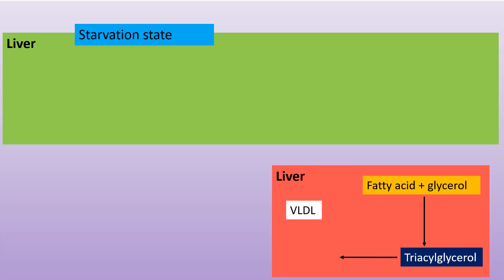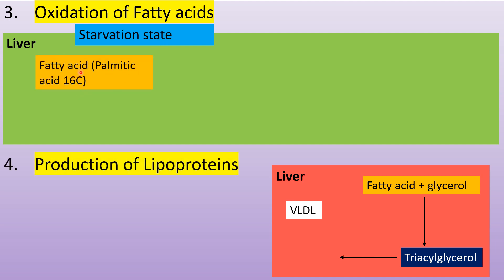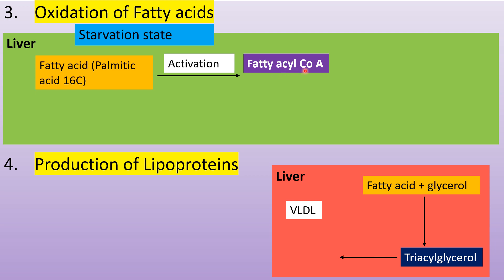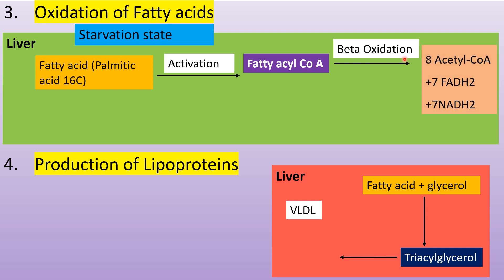The next function of the liver in fat metabolism is oxidation of fatty acid. In the starvation state, there is no energy fuel in the body. Fatty acid with 16 carbons is activated to form fatty acyl CoA. This activated form of fatty acid goes into beta oxidation and forms 8 acetyl CoA, because the 16-carbon palmitic acid is broken down and oxidized into 2-carbon acetyl CoA units, forming 8 acetyl CoA, 7 FADH2, and 7 NADH.